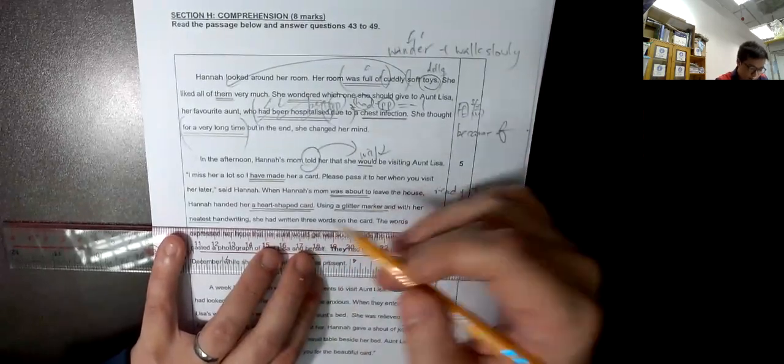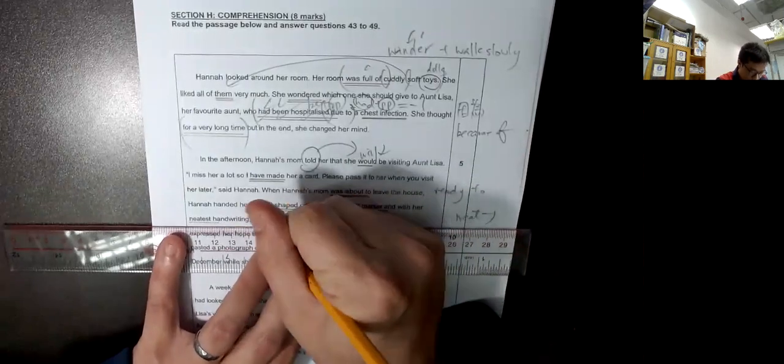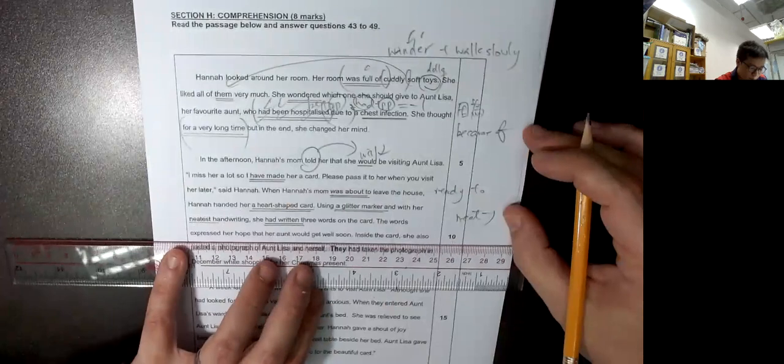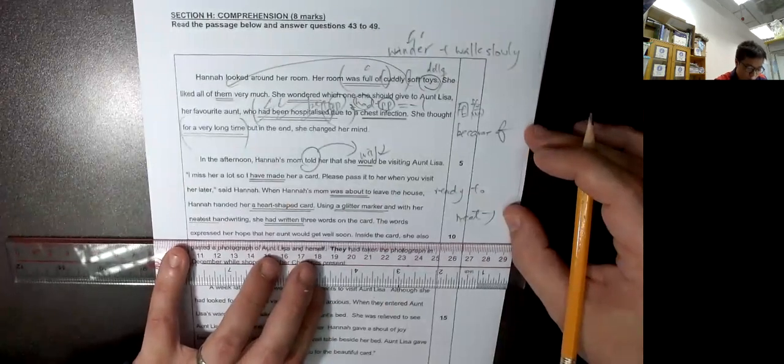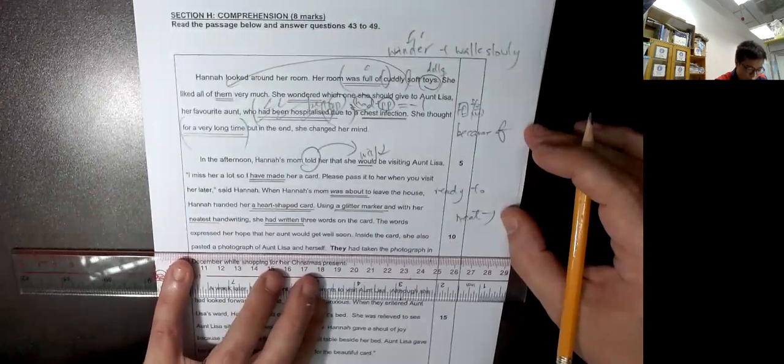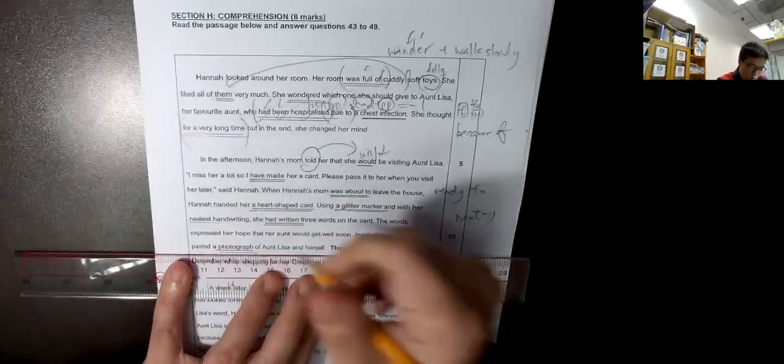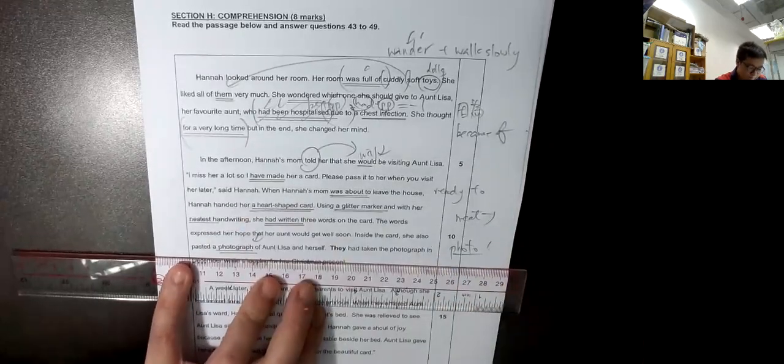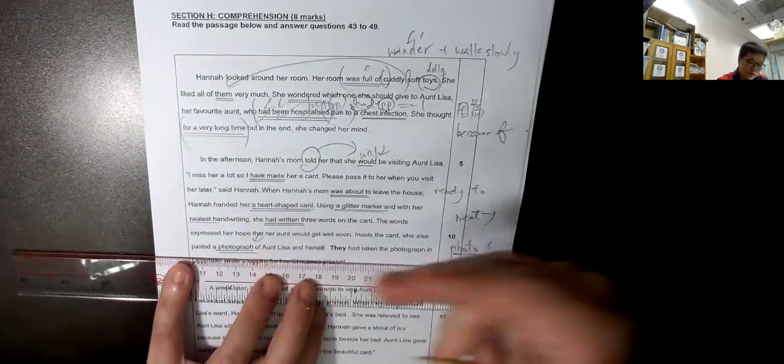用詞比較superdive,最整齊的手寫. She had written Past Perfect. 怎麼用作? Three words on the card. And the words express her hope that her aunt would get well soon. Inside the card, she also pasted a photograph. Photograph, 即是photo. Photo是短写, photograph就是長写. 所以photo的正確寫法是photograph.